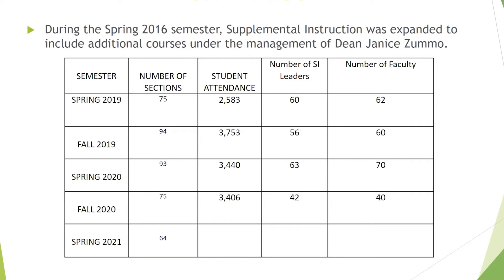I put together data for two years. For Spring 2019, we had SI in 75 sections, student attendance was 2,583, about 60 SI leaders, and about 62 faculty participating. For Fall 2019, we had 94 sections, student attendance of 3,753, about 56 SI leaders, and about 60 faculty. For Spring 2020, we had SI in about 93 sections, student attendance was 3,440, 63 SI leaders, and about 70 faculty members participating.